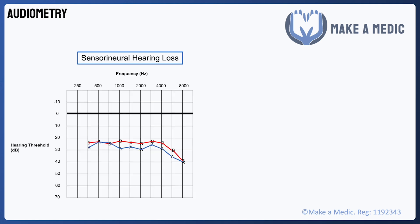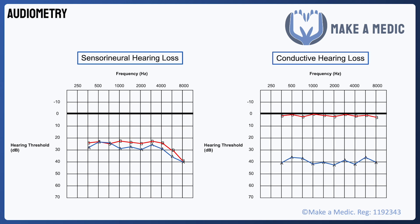In sensorineural hearing loss, the two lines will be similar again, but they will both be below the normal range, because sensorineural hearing loss affects both the air and bone conduction pathways. On the other hand, conductive hearing loss selectively affects air conduction while the bone conduction pathway remains intact, and this creates an air-bone gap on the audiogram, where the air conduction line is significantly below the bone conduction line.